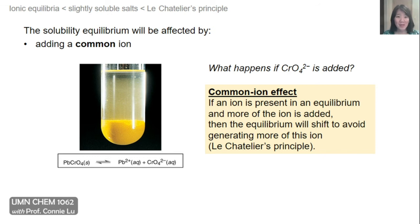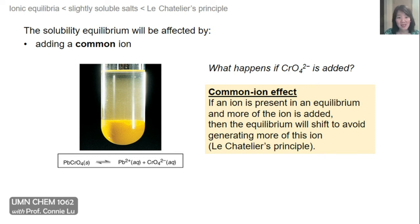We first heard about the common ion in the buffer solutions. A common ion means that the ion already present in solution is the same as the ion that's added to the equilibrium. And by Le Chatelier's principle, the equilibrium will shift its position away from this ion. Here's an experiment shown in the textbook where you have lead chromate, which is not very soluble, but some of it dissolves to form lead dication and chromate dianion. What would happen to this test tube if more chromate dianion was added?